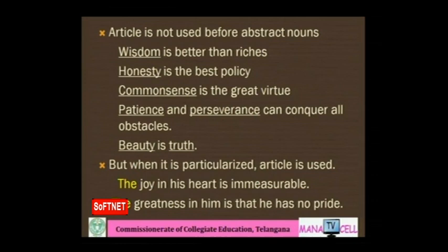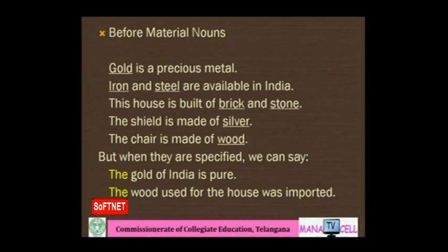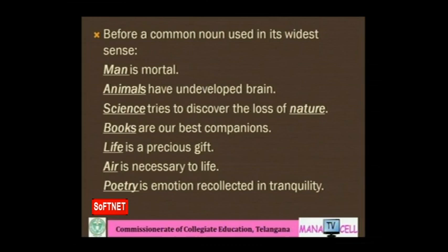Article is not used before abstract nouns: wisdom, honesty, common sense, patience and perseverance, beauty — no article is used. But when particularized, use 'the': 'The joy in his heart is immeasurable. The greatness in him is that he has no pride.' Similarly, articles are not used before material nouns: gold, iron, brick and stone, silver, wood. But when specified: 'The gold of India is pure. The wood used for the house was imported.'